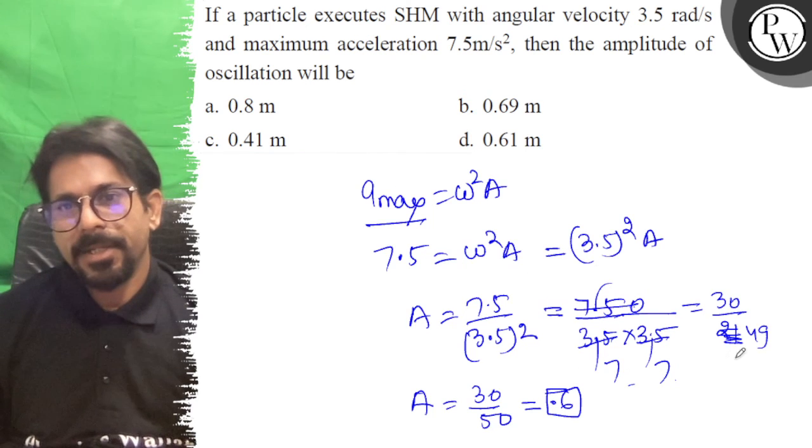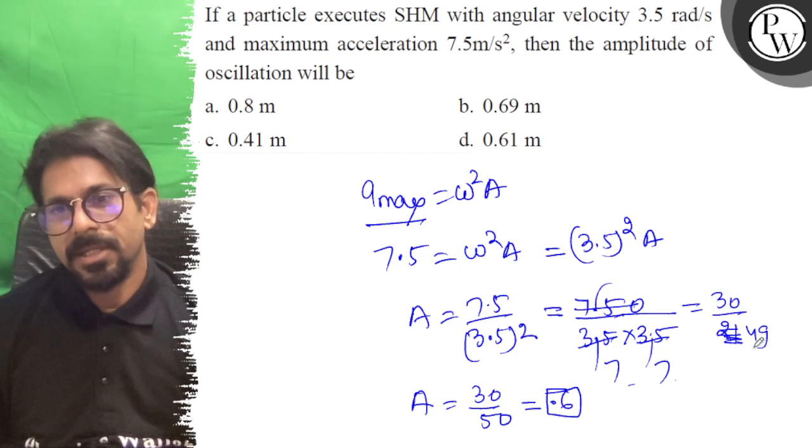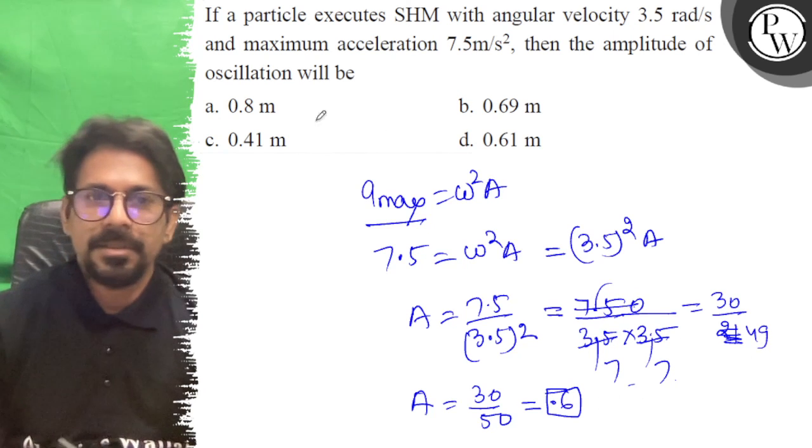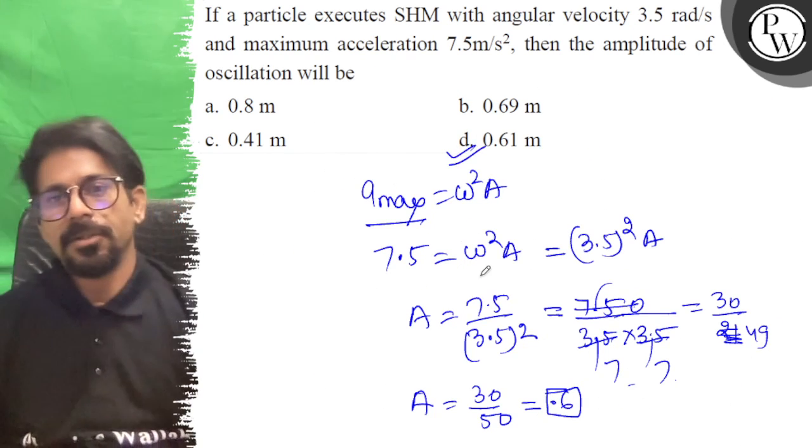So the logic is, because if I do 0.7 then it will go up to 30. So it comes to 0.6, so the right answer to the question is D. All the best.